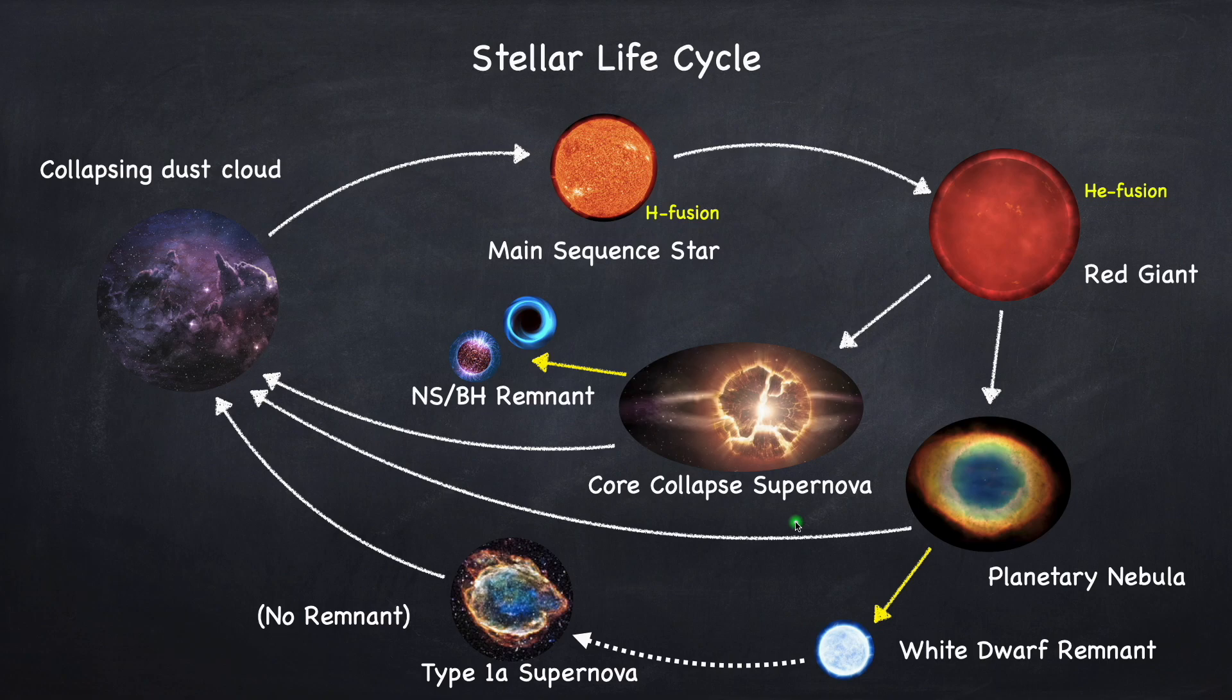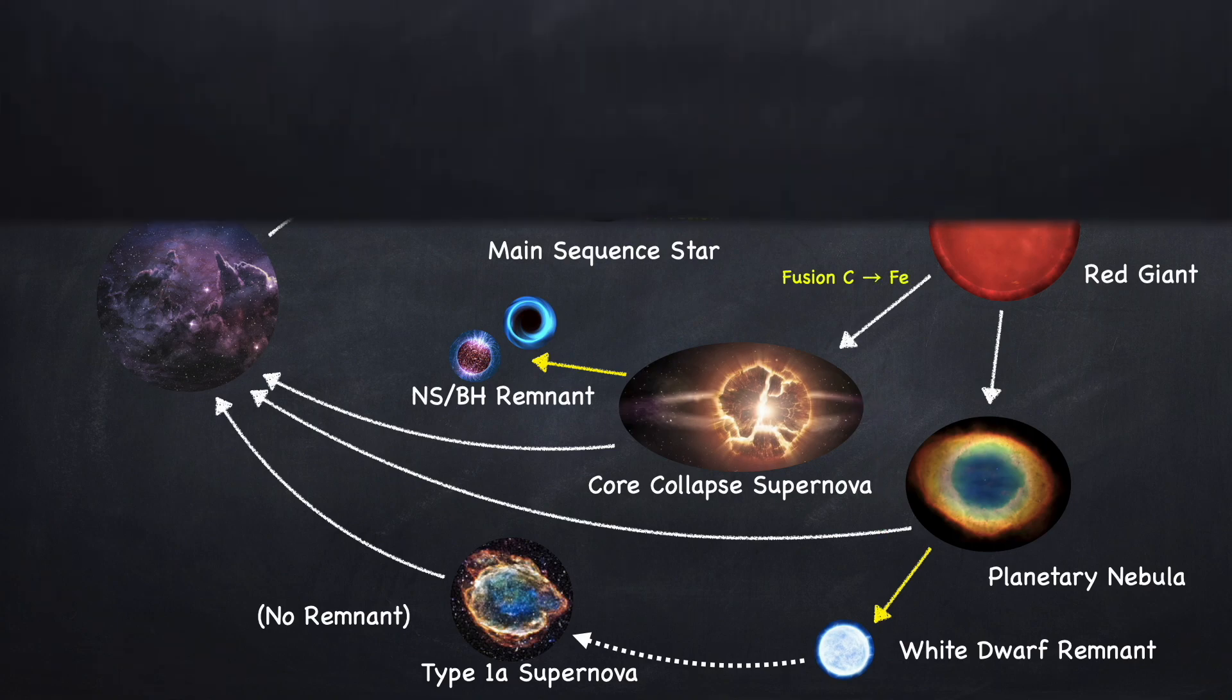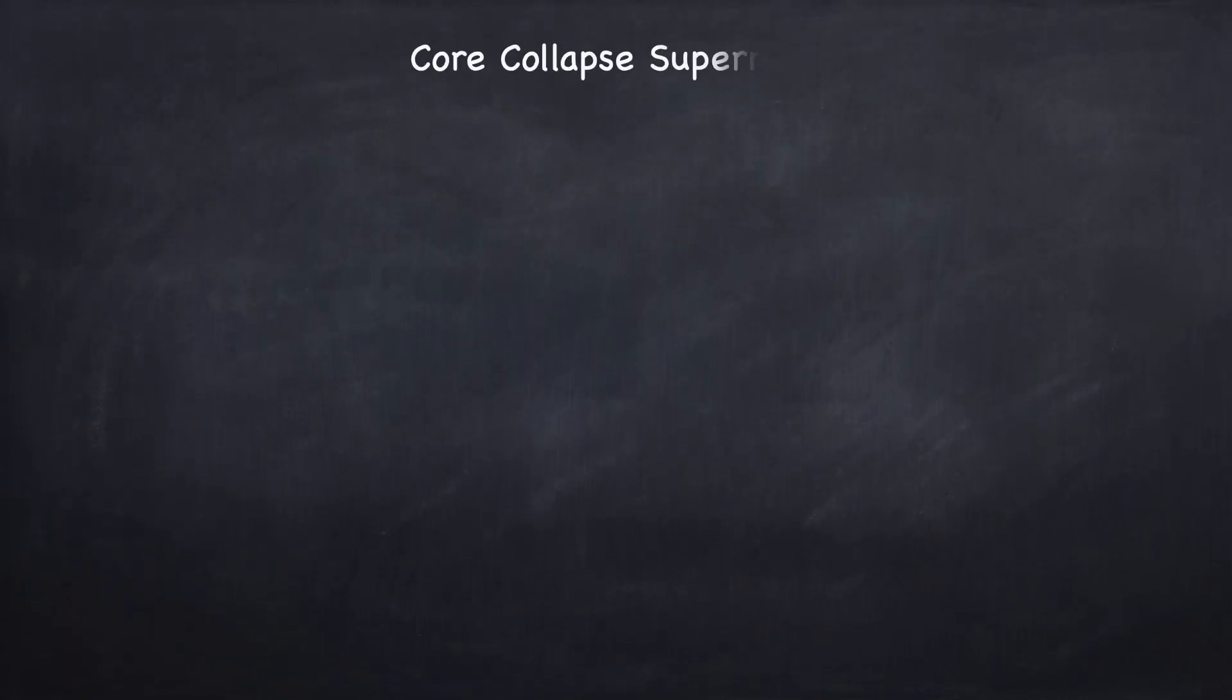Now let's take a look at what happens in this branch, where the star is large enough to fuse from carbon all the way to iron. In this case, once you get to iron, fusion will stop supporting the star against gravity, the core will collapse, until it eventually explodes in a core-collapse supernova. This will happen if the initial star mass is greater than about 10 solar masses.